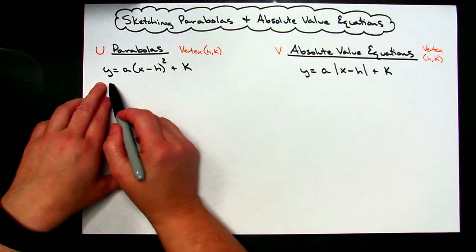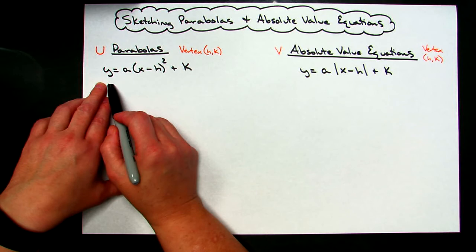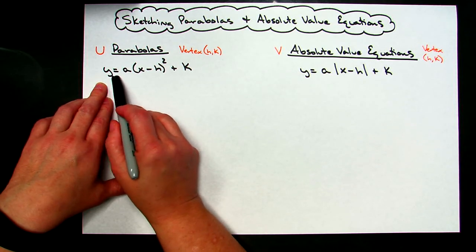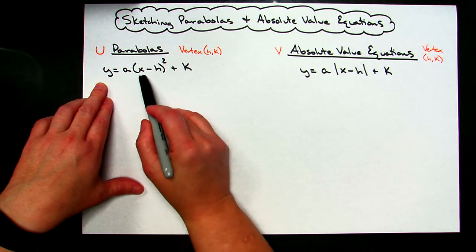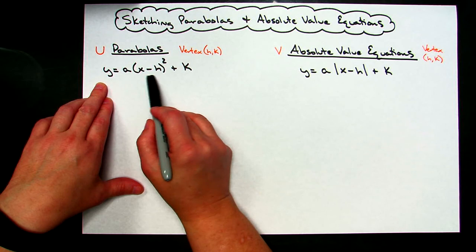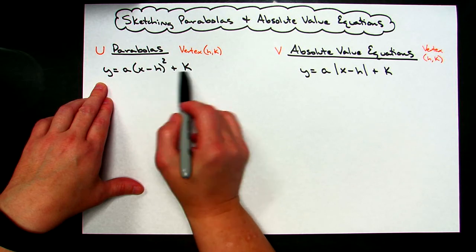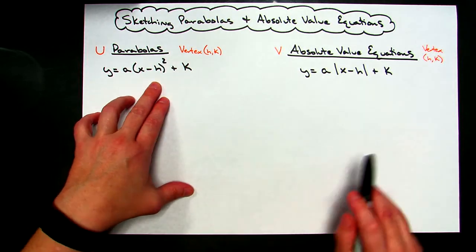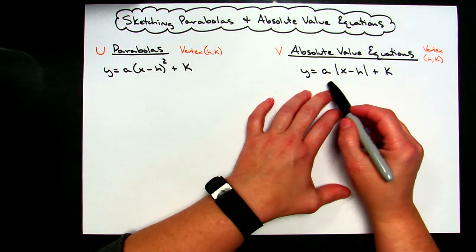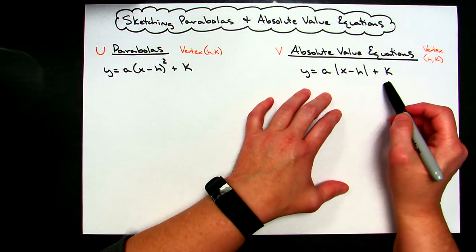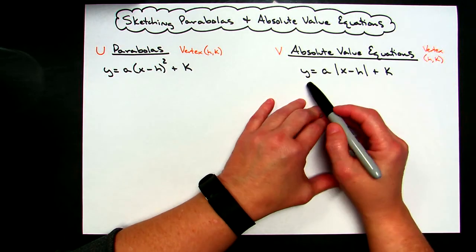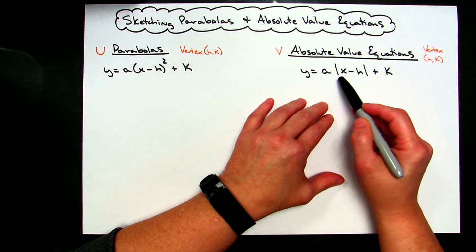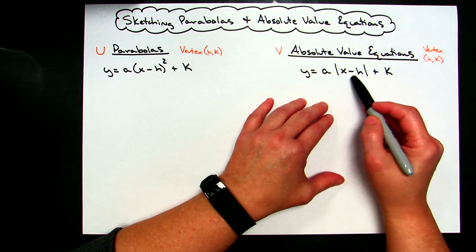For a parabola, we have an equation in vertex form: y equals a times the quantity (x minus h) quantity squared plus k. For the absolute value equation in vertex form, we have y equals coefficient a times the absolute value of (x minus h) plus k.